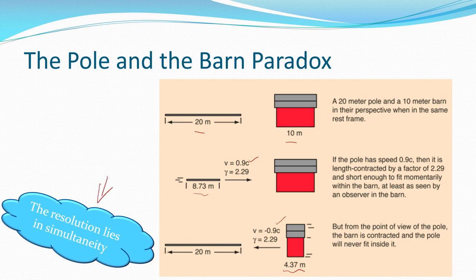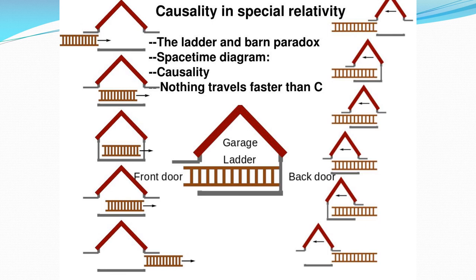The resolution lies in simultaneity. In the classic Newtonian version the pole won't fit. But in the scenario where the barn is stationary and the ladder is moving, its length is contracted — it can fit inside the barn. You can close both doors at the same time, fit the ladder inside, then quickly open the doors again and let it out the other side. With an 8-meter contracted ladder and a 10-meter barn, it fits if you close the doors at just the right moment.